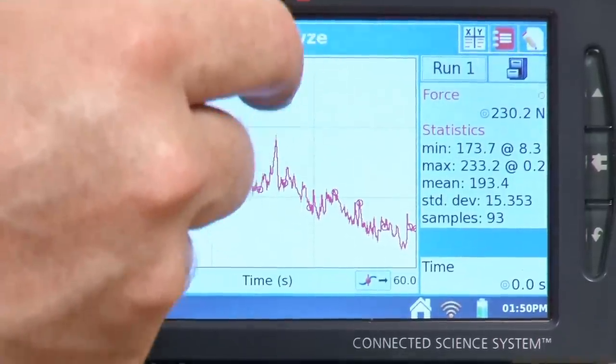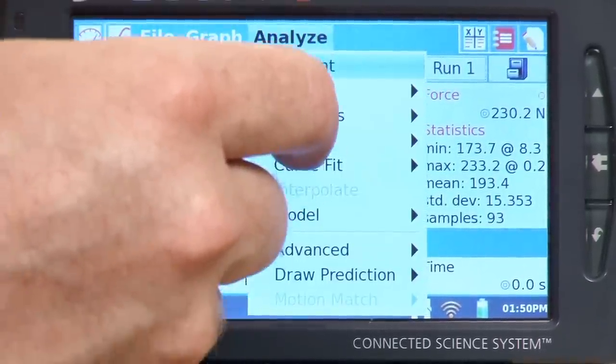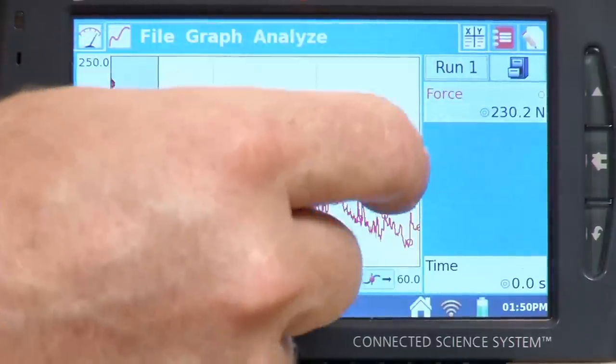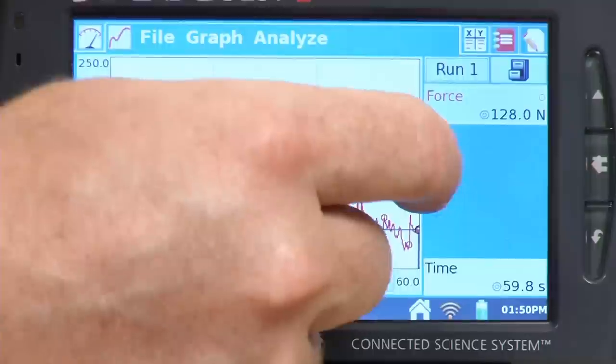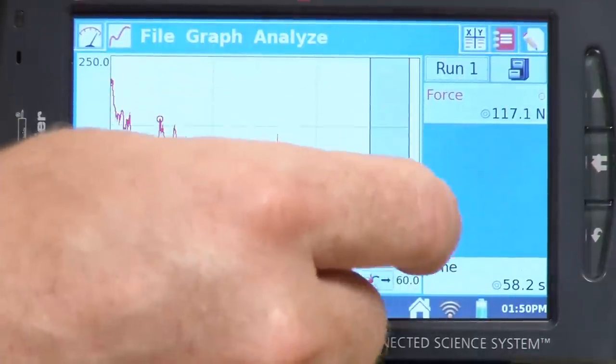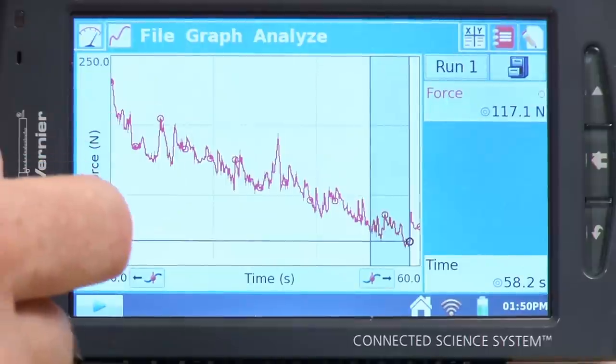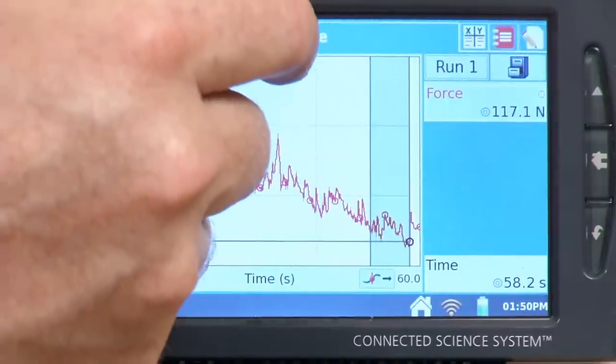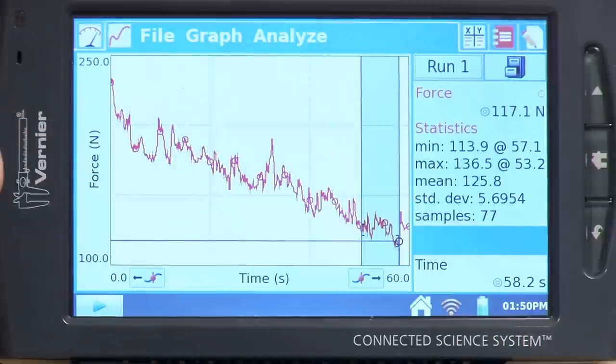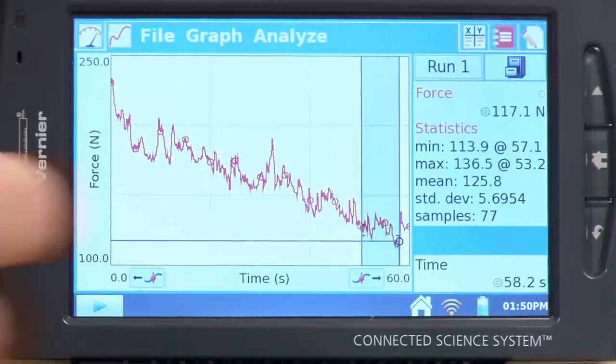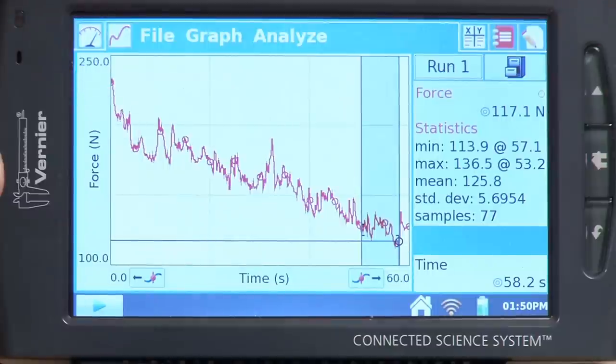Now what I'll do next is go and turn that off again. And I want to go back and analyze maybe this last part of the graph. And so I'll highlight a region there, and close to the end. And I can go back, do the stats again. And this time I end up with a mean force of 125.8 newtons. So at that point, my grip strength is not as strong as it was before.